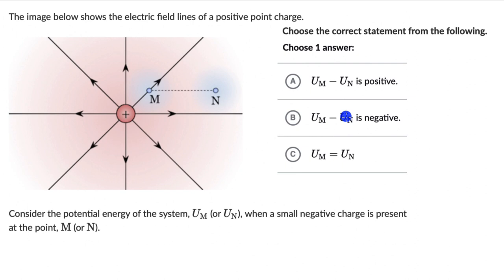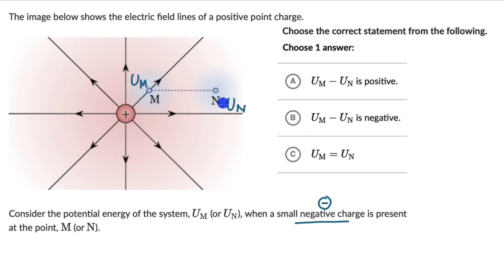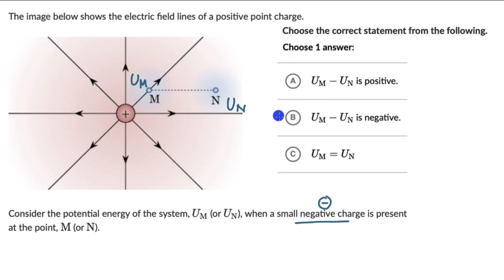Now let's try to see what the question is telling us. We have a small negative charge present at points M and N. The potential energy when the charge is at M is denoted by Um, and when the charge is at N it is denoted by Un. So which one is bigger — Um or Un? To answer this, we should ask ourselves: when there is a small negative charge in the presence of a fixed big positive charge, where and why will the negative charge move?